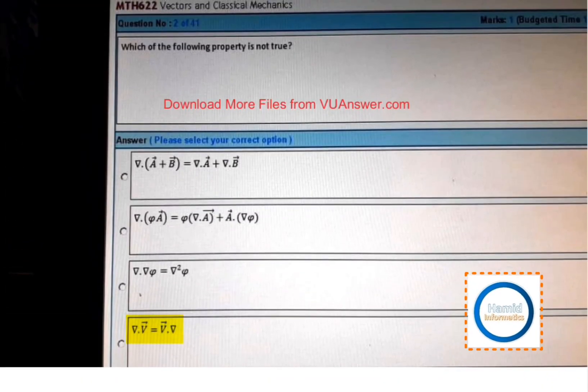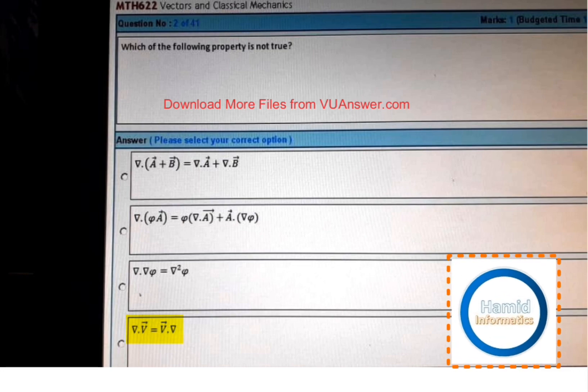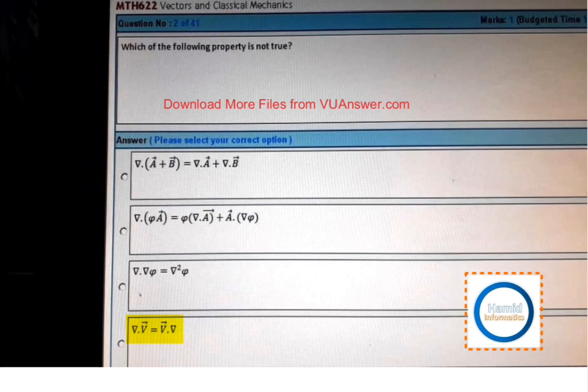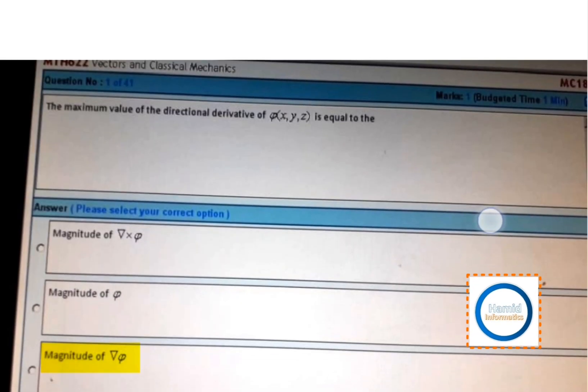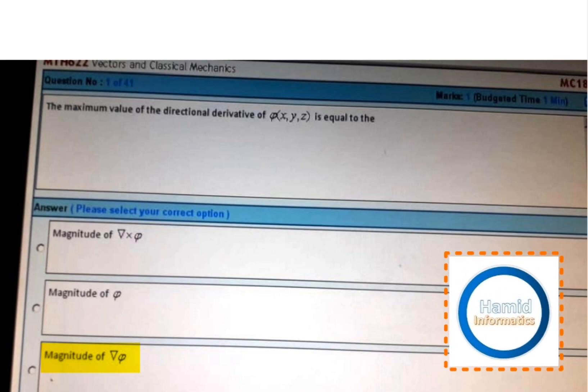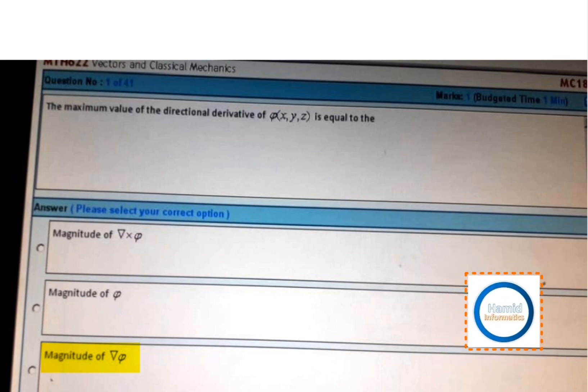The following property is not true: del dot vector v is equal to vector v multiplied del. The maximum value of the directional derivative of phi XYZ is equal to the magnitude of del phi, and the question is end.